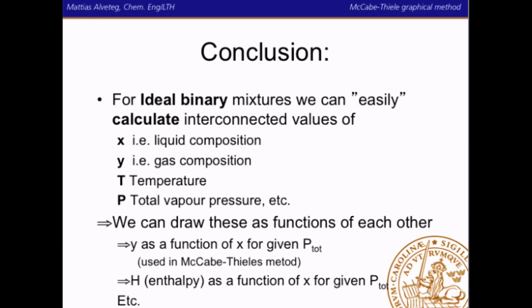For ideal binary mixtures, we can easily calculate interconnected values of liquid composition, gas composition, temperature, total vapor pressure, etc., and we can draw these as functions of each other in different ways. We can draw, for example, the gas composition as a function of liquid composition for a given total pressure, which is used in the McCabe-Thiele graphical method. We can draw enthalpy as a function of liquid composition, and so on.